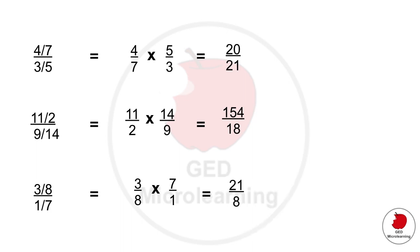So when you multiply you get 21 over 8. So now we're going to use what we just learned and we're going to apply it to two word problems.